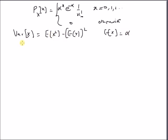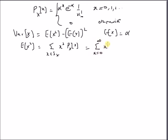Now our goal is to find the second moment, that is E[X²], which is defined as the summation over all values of x in the range S_X of x² times p_X(x). By using the definition, we have the sum from x = 0 to infinity of x² times alpha^x * e^(-alpha) * (1 / x!).